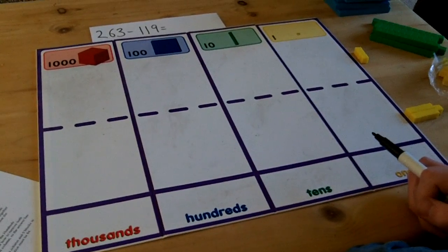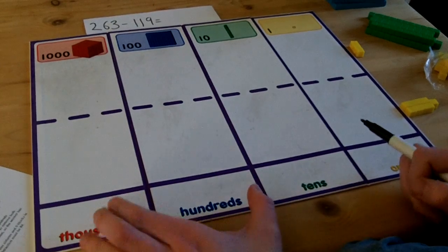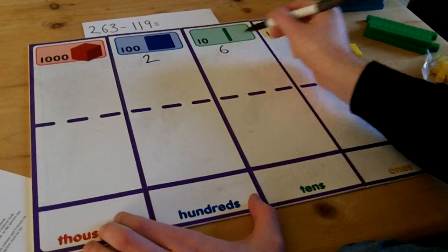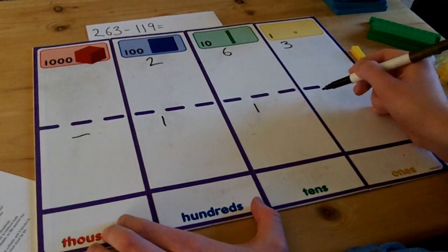This video will show you how to use Dienes cubes to subtract a three-digit number from another. The subtraction I'm going to solve is 263 subtract 119.